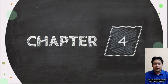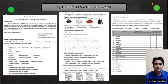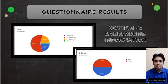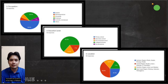I will now explain chapters 4 and 5. Chapter 4 includes questionnaire design and results, while chapter 5 includes design criteria and direction. In the questionnaire design, we have three sections: Section A for background information, Section B for user preferences, and Section C for user requirements. From the results, most respondents are aged 21 to 39 years old, mostly male, predominantly students and employees at university education level, and located in the central region of Malaysia.